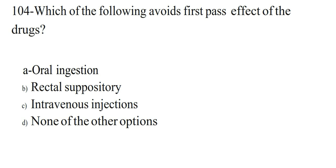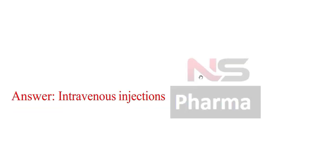Next question. Which of the following avoids first pass effect of the drugs? Option A. Oral injection. Option B. Rectal suppository. Option C. Intravenous injections. Option D. None of the other options. Answer: Intravenous injections.